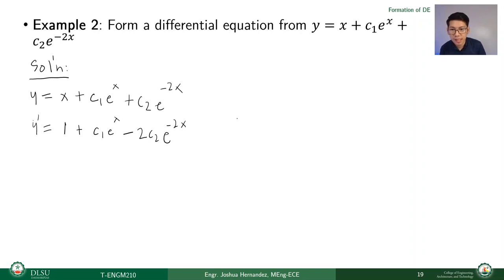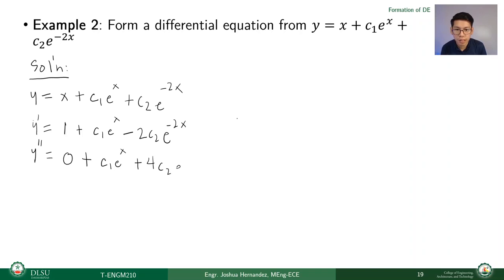Taking the second derivative: y'' = 0 + c1·e^x + 4c2·e^(-2x). Let's call the original equation 1, the first derivative equation 2, and the second derivative equation 3. We now have three equations and two unknowns — this is a system of equations from algebra which we can solve by elimination.